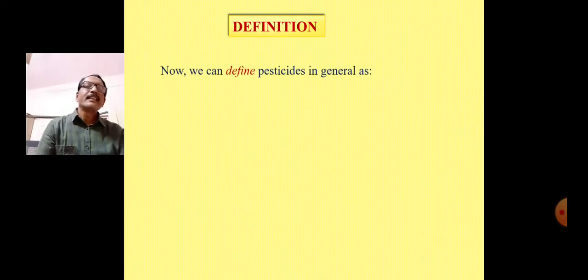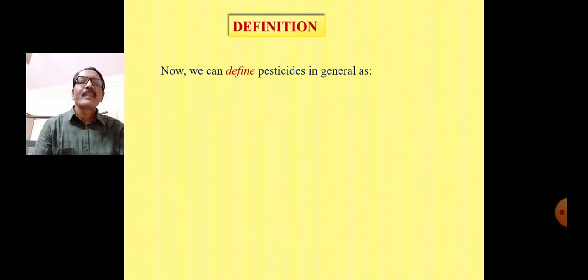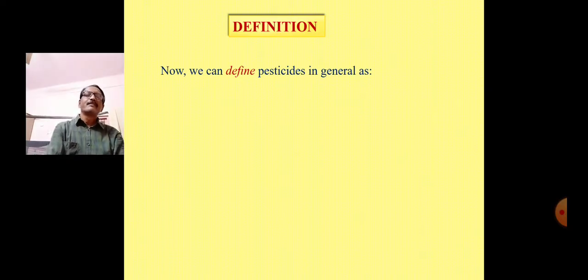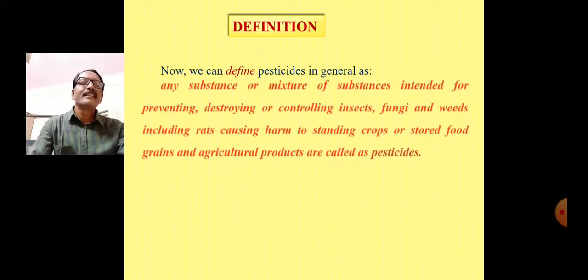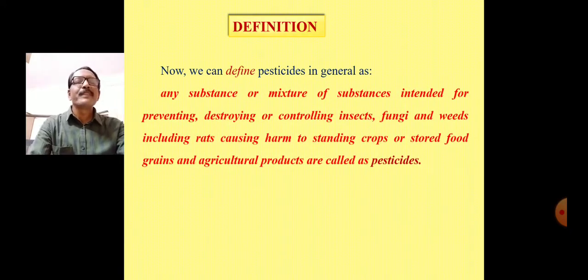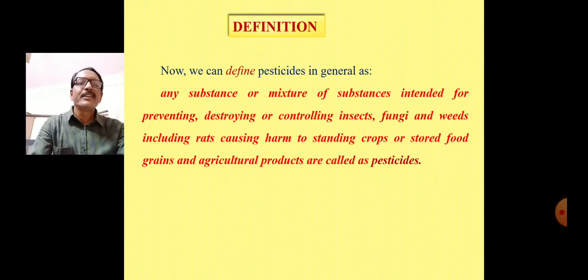Now we have three definitions — from WHO, EPA and FAO. A consolidated definition: any substance or mixture of substances intended for preventing, destroying or controlling insects, fungi and weeds, including rats, causing harm to standing crops or stored food grains and agricultural products, are called as pesticides.